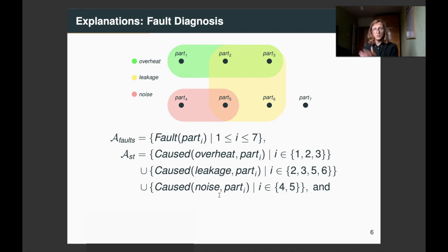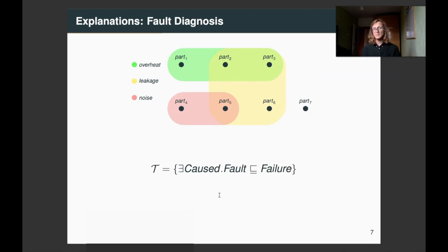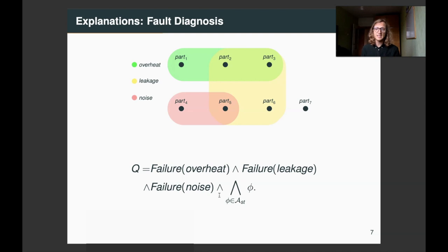We can capture what parts cause what failures. So, for example, part one causes overheat. And finally, of course, A-box is a union of the two. Then, the T-box captures that if the part fails, then we observe the corresponding failure. And finally, the query tells us that these three failures are observed, and the structural effects encoding the system are present.